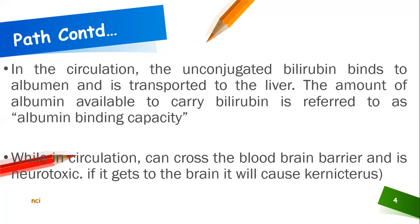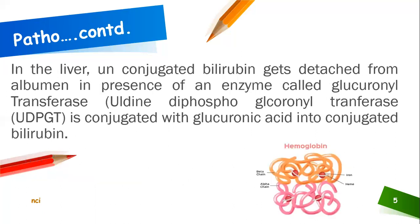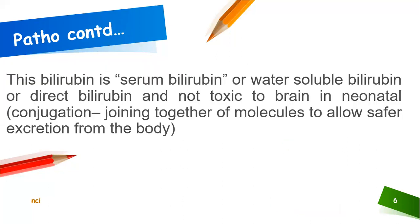Whilst in circulation, the unconjugated bilirubin can cross the blood-brain barrier, which should not be the case. This unconjugated bilirubin is considered to be neurotoxic, which may result in convulsions. In the liver, the unconjugated bilirubin will get detached from albumin in the presence of an enzyme and an acid. Once this has happened, the conjugation process commences, and once complete, the bilirubin becomes water-soluble and non-toxic to the brain of a neonate or a child.